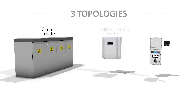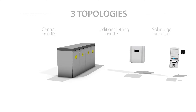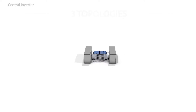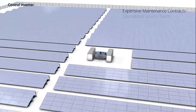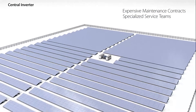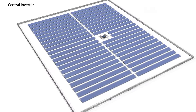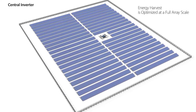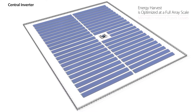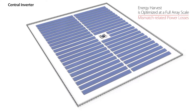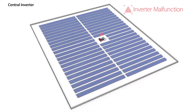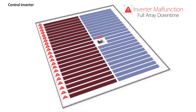A central inverter, a traditional string inverter, and the SolarEdge solution. Let's first take a look at central inverters. Central inverters have expensive maintenance contracts and can only be serviced by specialized teams, leading to high operating expenses. In addition, energy harvest is optimized at a full array scale, leading to mismatch-related power losses, and every inverter malfunction results in full array downtime.